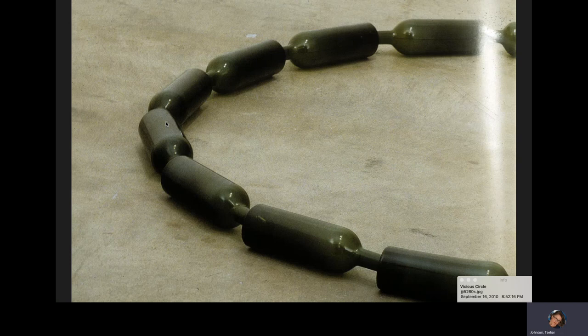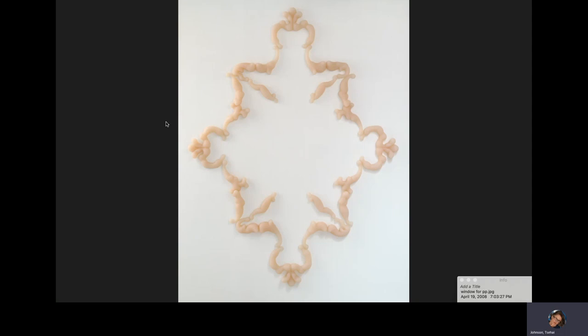This is another piece by Mona Hatoum — this is only half of it — called Vicious Circle. I suspect the piece is about alcoholism or something like that, and it's basically an interlocking circle of wine bottles.